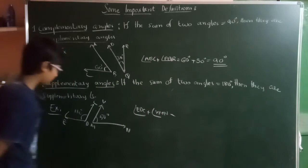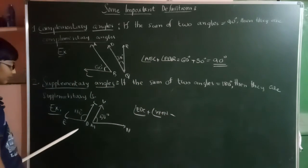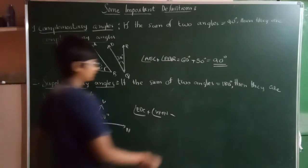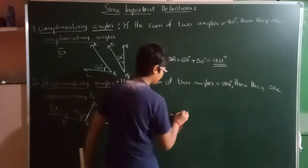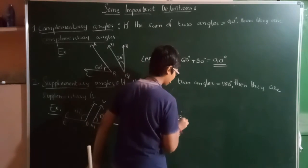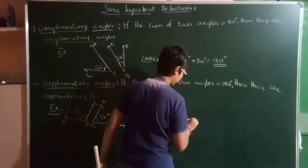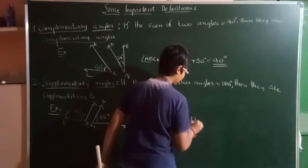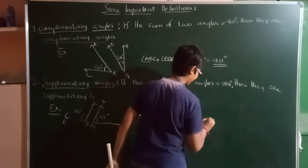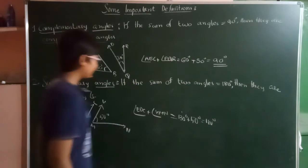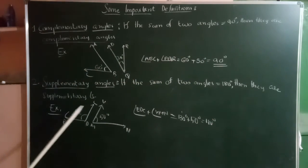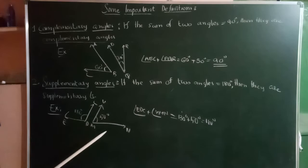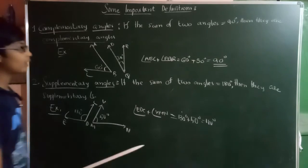Angle EDC is 130 degrees and angle VMN is 50 degrees. 130 degrees plus 50 degrees gives 180 degrees. So, these both angles are said to be supplementary angles.